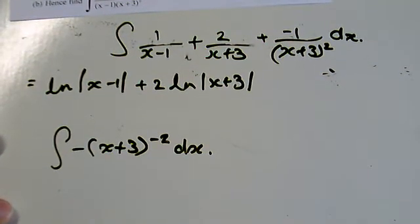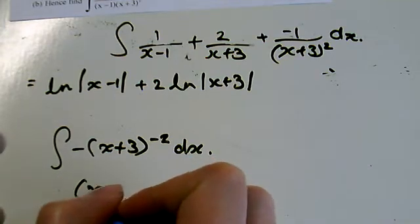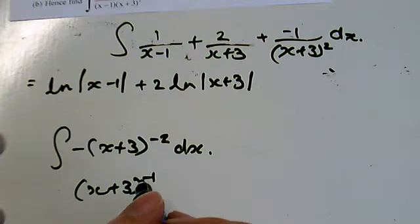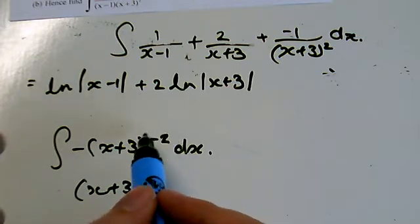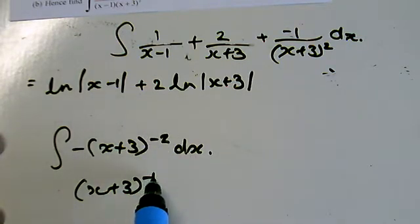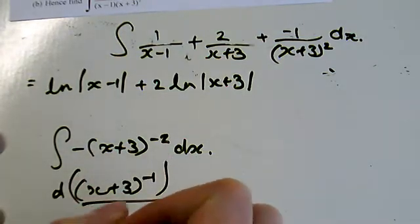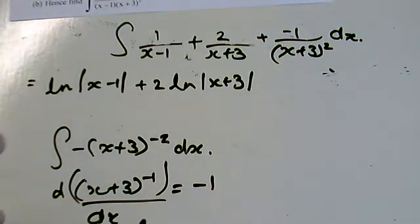I'm going to cheat a little bit. I know that x plus 3 to the minus 1, when I differentiate that, because I know I need to power 1 bigger. When I differentiate that, the minus 1 comes down the front. I would diff what's in the middle.